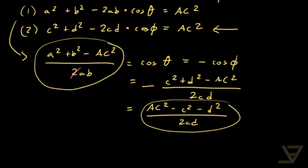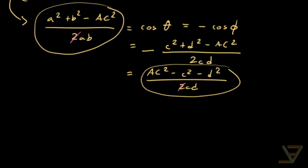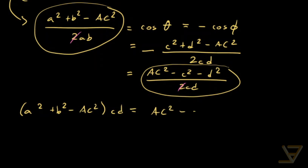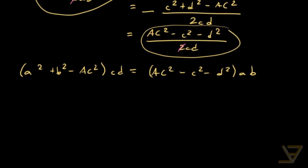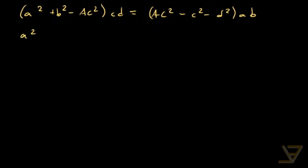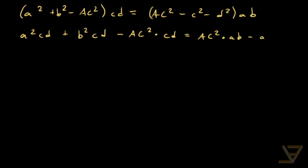We cancel the twos and cross-multiply by abcd to get: (a² + b² − AC²)·cd = (AC² − c² − d²)·ab. Expanding: a²cd + b²cd − AC²·cd = AC²·ab − abc² − abd². Rearranging all terms.